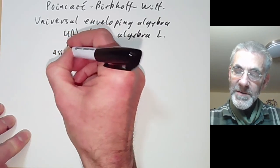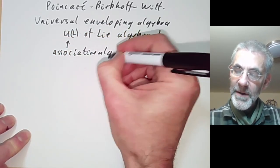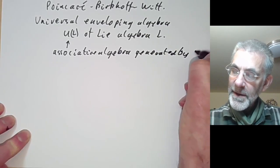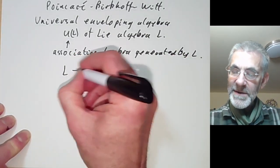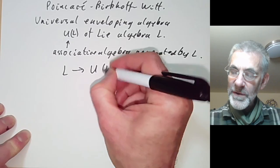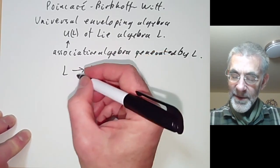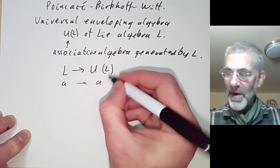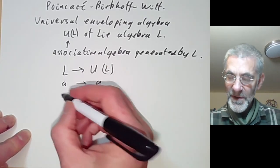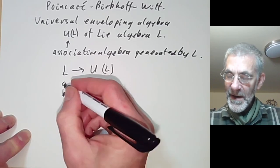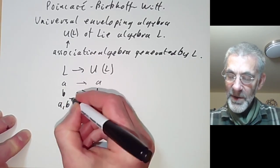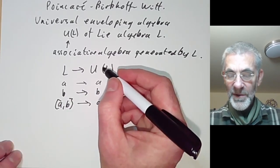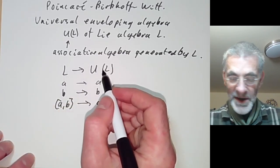The universal enveloping algebra is informally the associative algebra generated by the Lie algebra L. There is a map from L to U(L), and if A and B are elements with images in U(L), then the commutator of A and B in L must be mapped to AB minus BA in the universal enveloping algebra. So L is a Lie algebra and U(L) is an associative algebra.